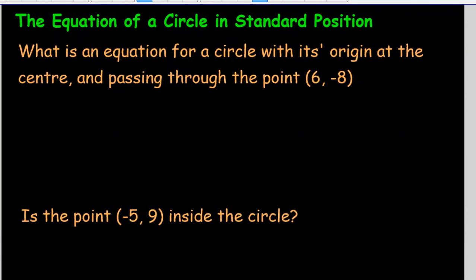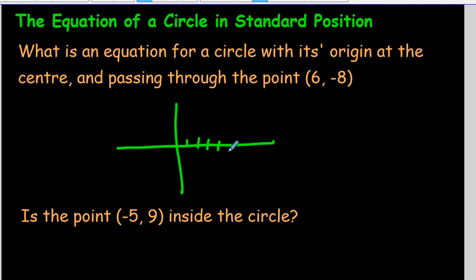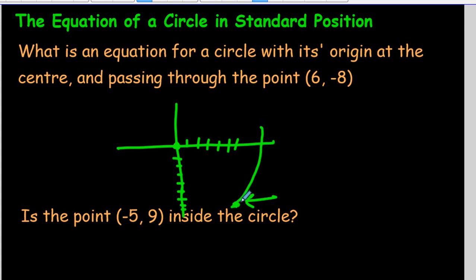Next question: what is an equation for a circle with its center at the origin, passing through the point (6, negative 8)? So the center is at the origin, and we need a circle whose edge passes through 6, negative 8 — which is 6 across and 8 down. How do we figure out the radius to reach that point? We can use the Pythagorean theorem.